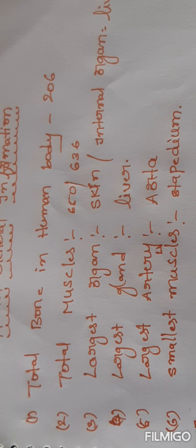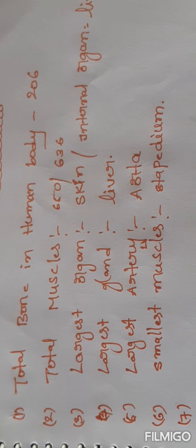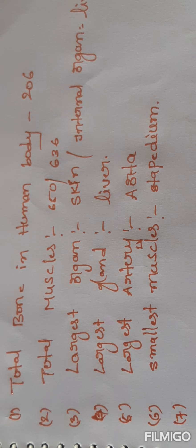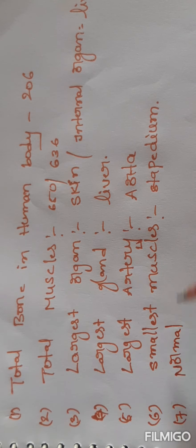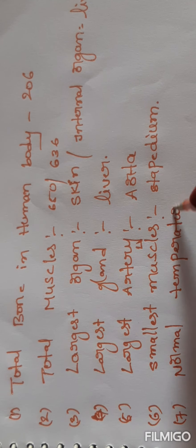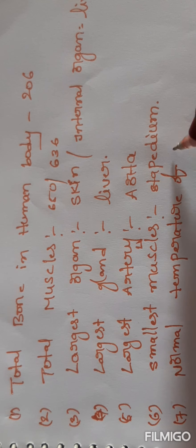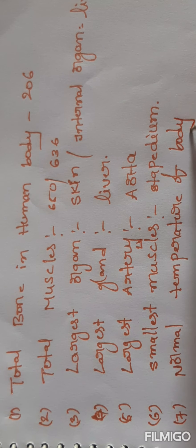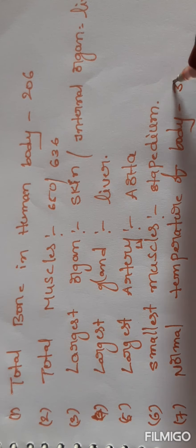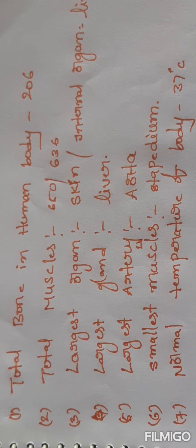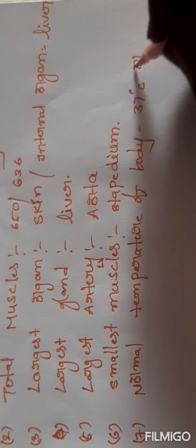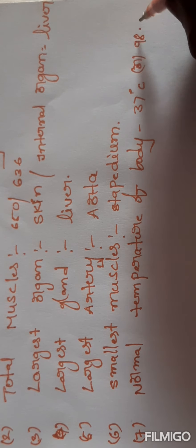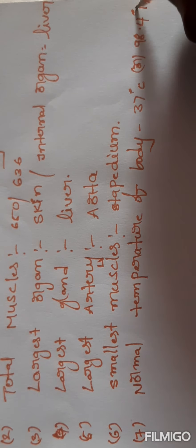Seventh one: normal temperature of the human body is 37 degrees Celsius, which is equal to 98.4 degrees Fahrenheit.